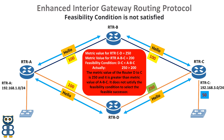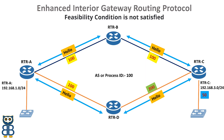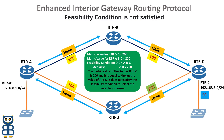Router D cannot be a feasible successor simply because it doesn't satisfy the EIGRP feasibility condition. What if Router D to C metric value is 200? In that case, since metric value 200 is equal to the metric value of Router A to B to C, Router D still cannot be used as an EIGRP feasible successor. The metric value of Router D to C must be strictly smaller than that of Router A to B to C.